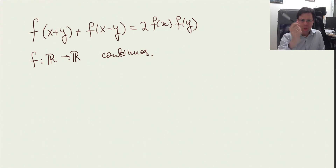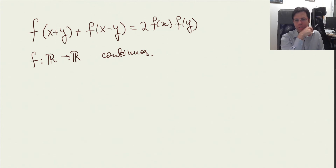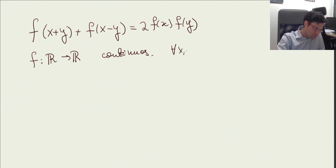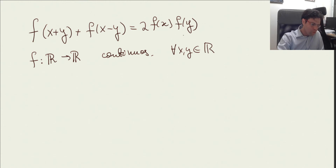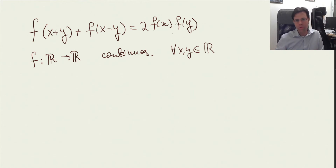We're asked to find all continuous functions from R to R — single variable functions — such that for all x, y that are real, with f defined everywhere, we would have this equality. So we want to find all the functions satisfying this equation.